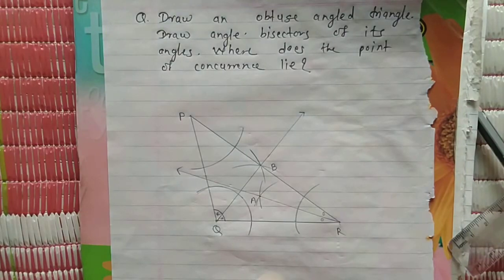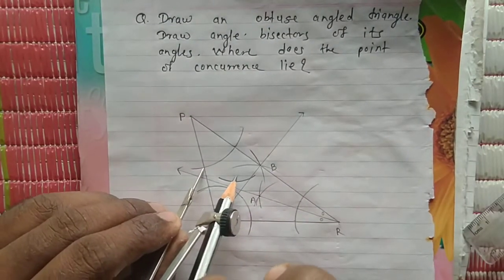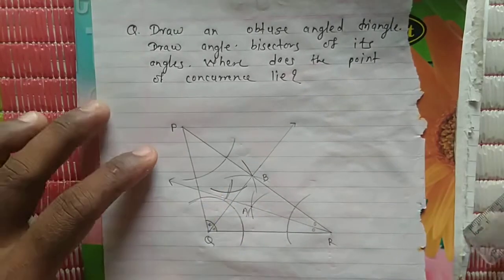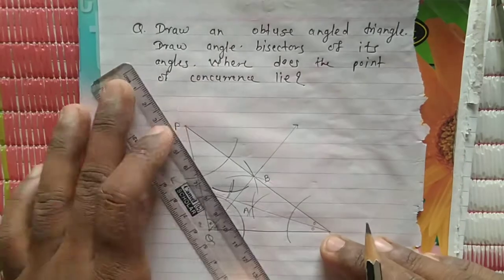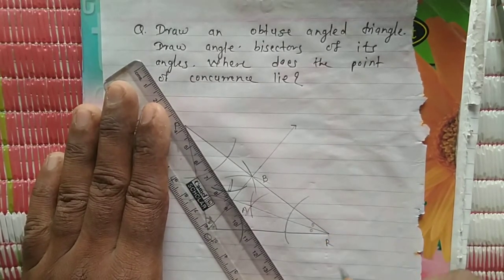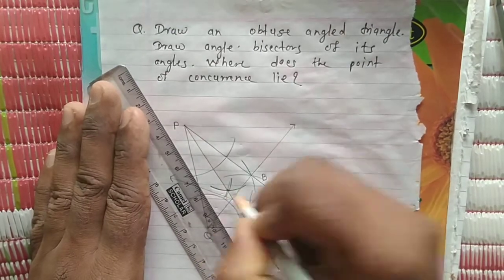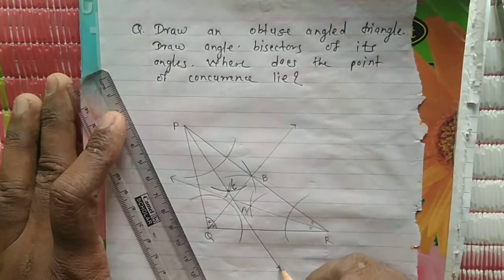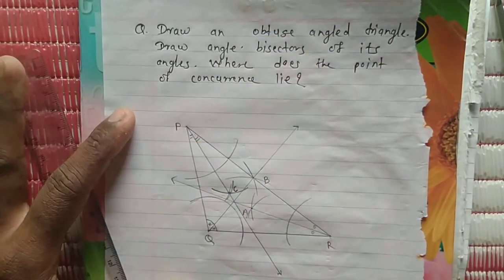Place the metal tip of the compass on vertex P. Draw an intersecting arc which intersects both arms of angle P. Then take a distance greater than half in the compass and draw arcs. Draw another arc so both arcs intersect at a point. Then join these two points. This is the angle bisector of angle P — PC is the angle bisector of angle P.